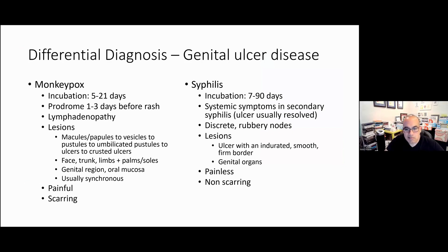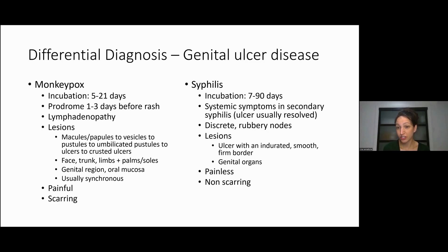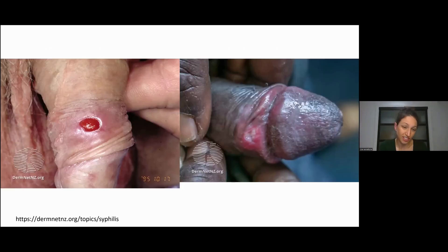Syphilis can have systemic symptoms if secondary, but the ulcer is primary syphilis, and usually by secondary syphilis the ulcer is gone — so mostly no systemic symptoms. Lymph nodes can be present but they're small and rubbery, versus the large painful ones of monkeypox. The lesion is classically an ulcer with a smooth, firm, indurated border — fairly specific to syphilis — with no pain at all. People can have a large ulcer on their genital organs and not complain of any pain. Usually no scar.